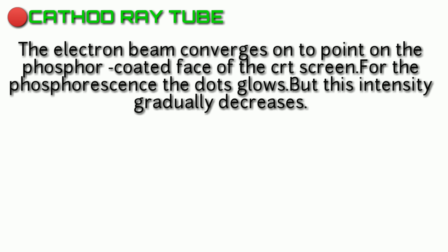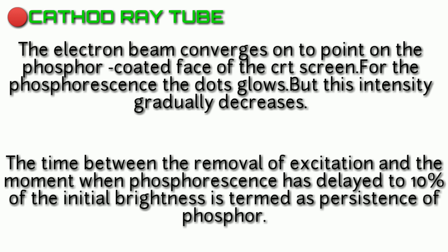The electron beam hits a phosphor-coated face and converges on the CRT screen. At that time, the phosphorescence phenomenon causes the screen to glow. This glow is not permanent — the glowing intensity gradually decreases over time.